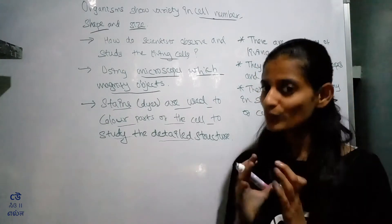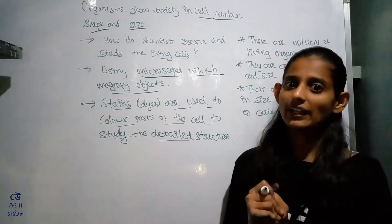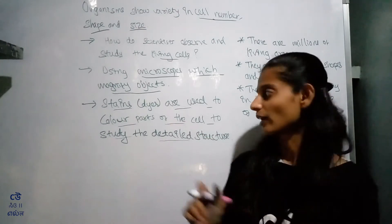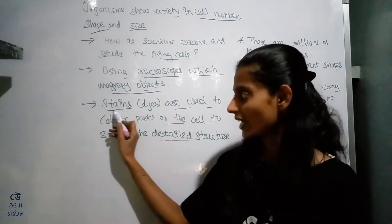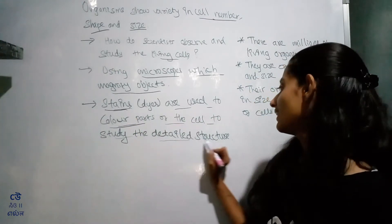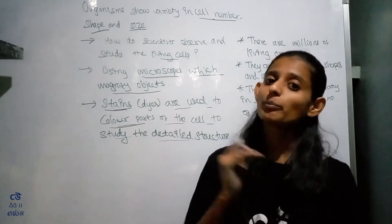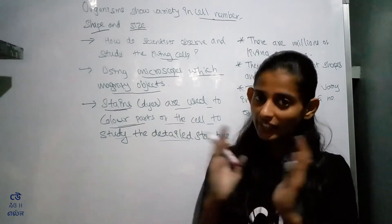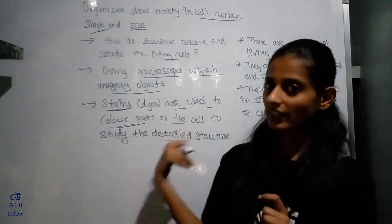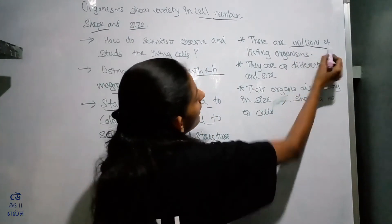We put a cell sample on a small object slide and use stains and dyes — different colors — to study the detailed structure of the cell. The stains and color help reveal what the cell looks like in detail.